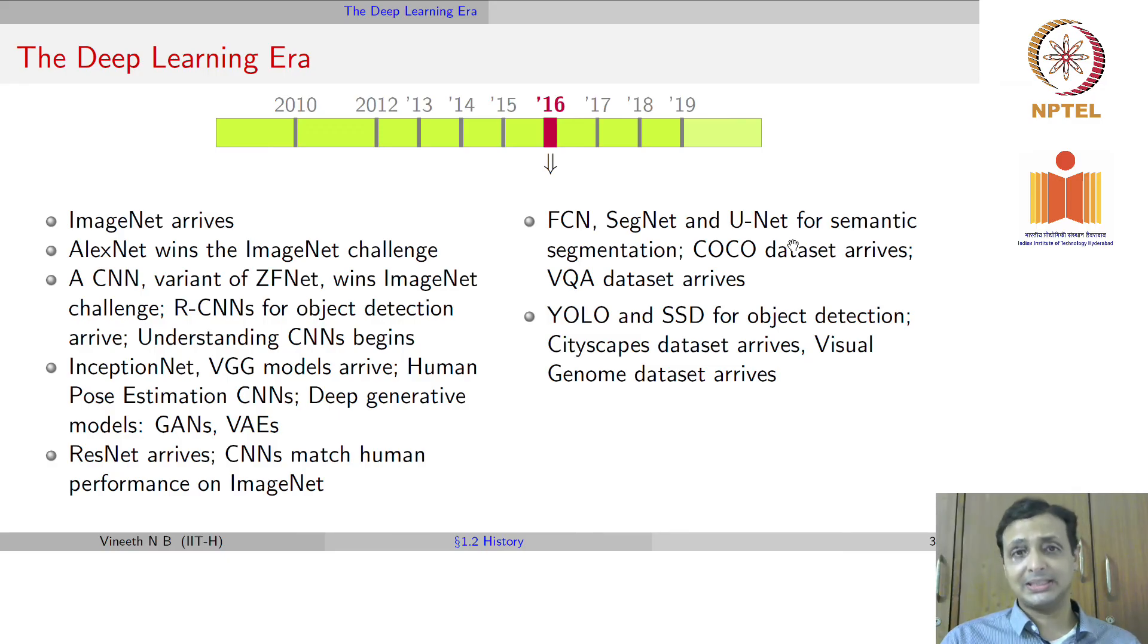In 2016, moving beyond region-based CNNs for object detection, single stage methods such as You Only Look Once and Single Shot Detector, YOLO and SSD, were developed. The Cityscapes dataset arrived, the Visual Genome dataset arrived. 2017 was the start of a higher level of abstraction in understanding images, which is scene graph generation. Given an image, how do you understand what is the scene graph? A person sitting on a horse or a man going on a motorbike, and so forth.